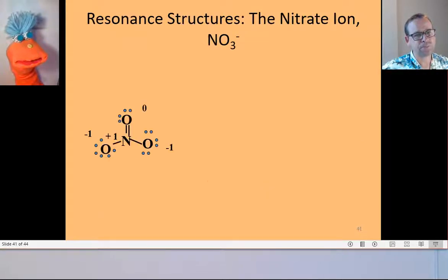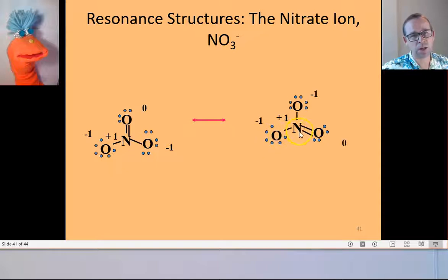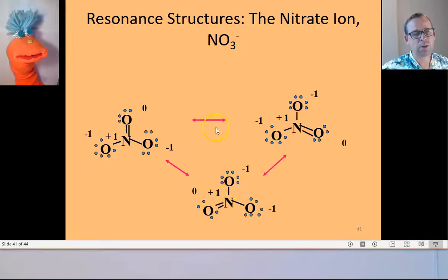So what are the resonance structures for the NO3 minus ion? Well, first we would draw the nitrate ions Lewis dot structure, and then the resonance structures would be created by changing that double bond to different places on the molecule and resulting in different locations of the double bond around. And you'd have these three different resonance structures.